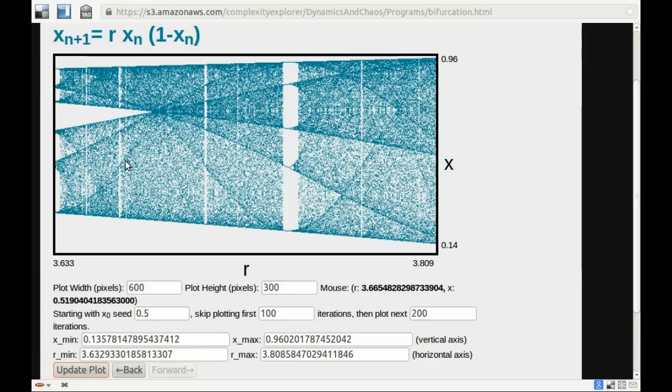Those are regions where there happen to be more points. At this value, the orbit is aperiodic, and as I plot more and more points, it starts to fill up this interval. But the points occur more often at some values than others. So that's where these dark lines occur. Those are unusually likely or common values.